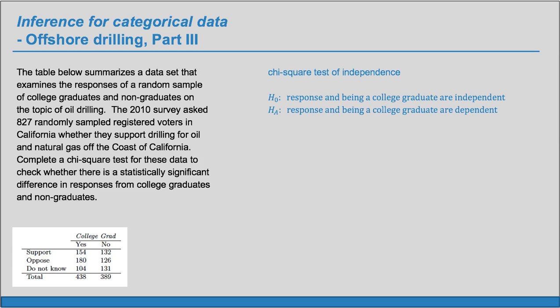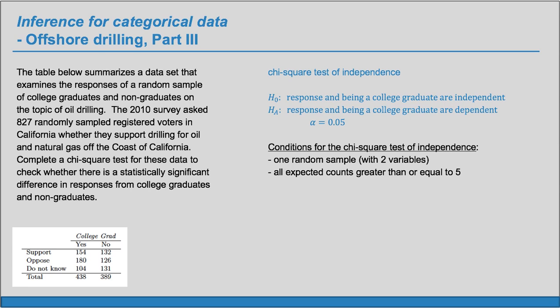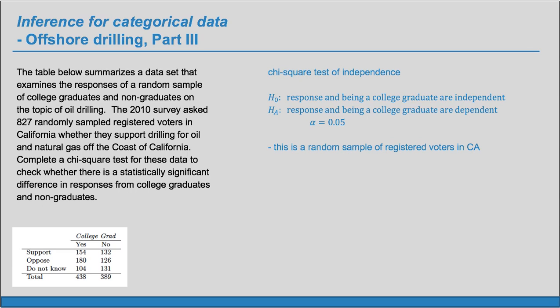We can set our significance level alpha to 0.05. And we can check our conditions for the chi-square test of independence. We need one random sample, and this is going to have two variables. All expected counts should be greater than or equal to 5. This is a random sample of registered voters in California, so that condition is met.